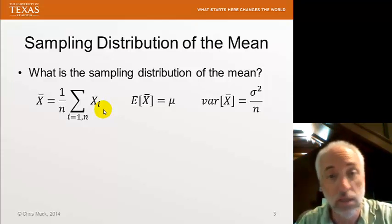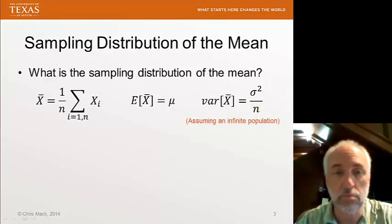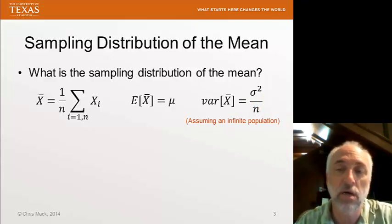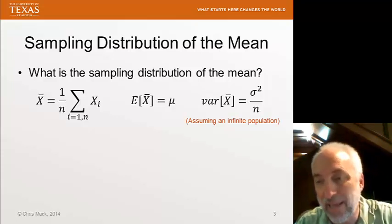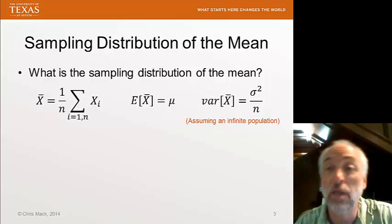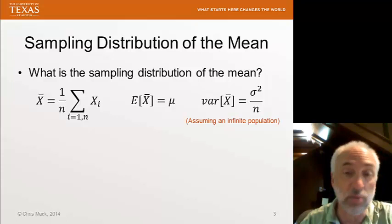So if I want to make my estimator more precise, then I need a larger sample size, make n bigger. This equation assumes an infinite population. Whenever we have a finite population, and the sample size approaches or exceeds about 10% of the entire population, then there's a correction that we have to use to this formula. I won't discuss that, but you can look it up if you ever need it.